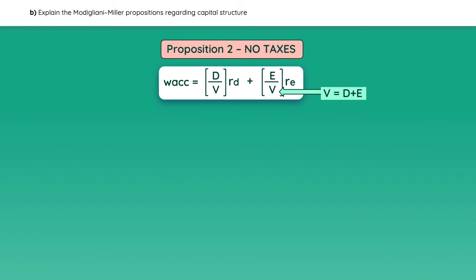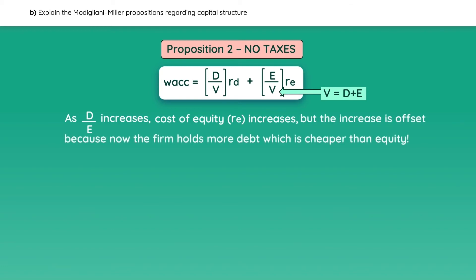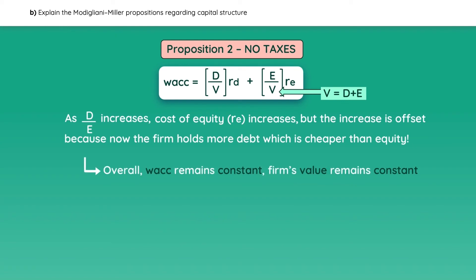Here's what happens. As the firm takes on more debt, it becomes riskier, so its cost of equity increases. However, the proposition states that the increase in the cost of equity is entirely offset by the fact that the firm now holds more debt, which is cheaper than equity. So overall, the WACC remains constant and the value of the firm also remains constant.